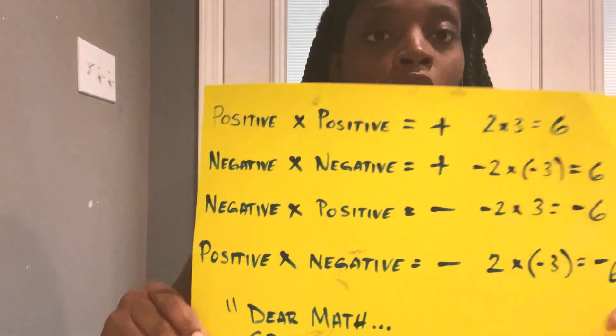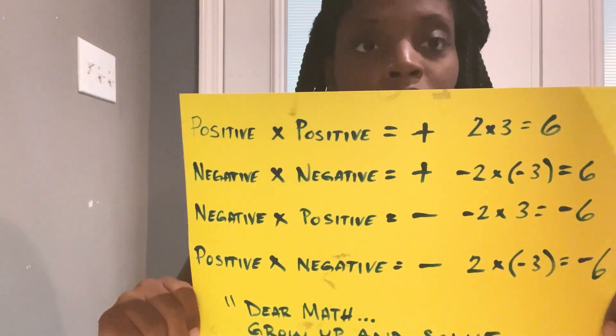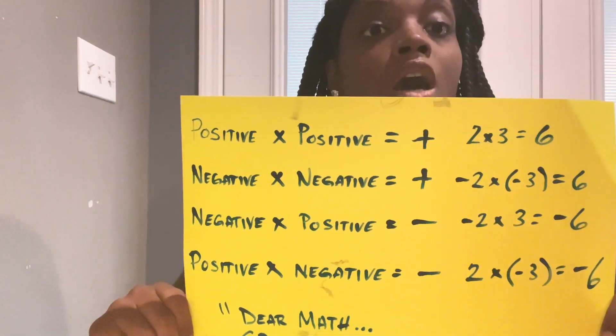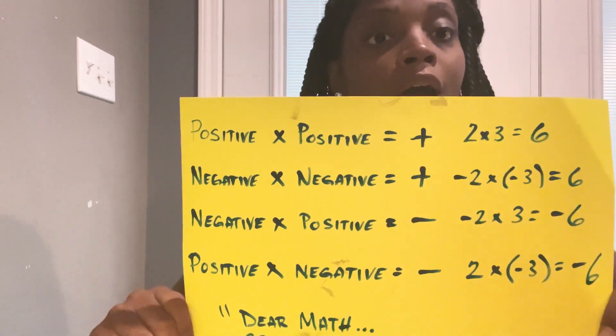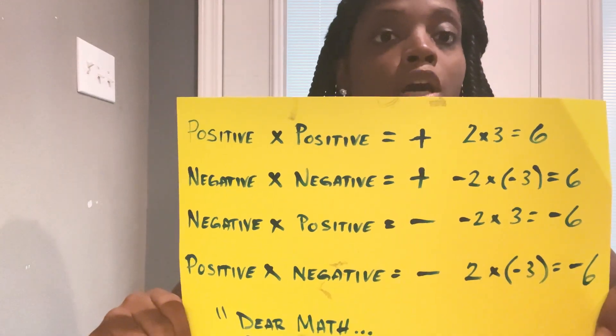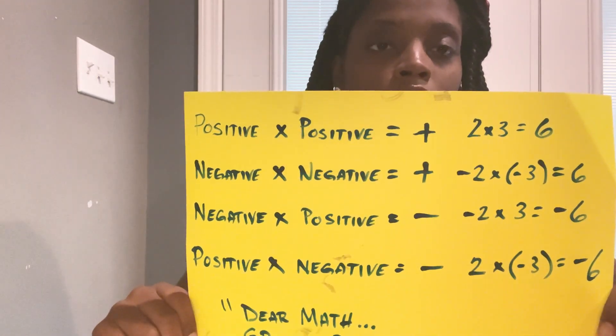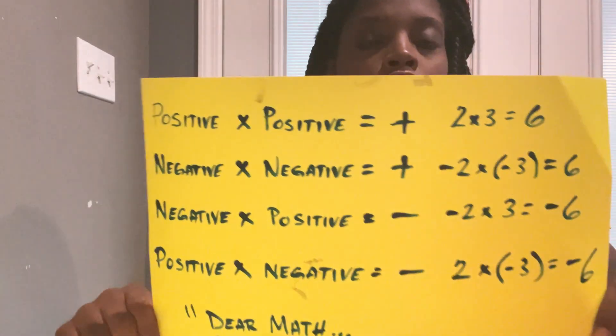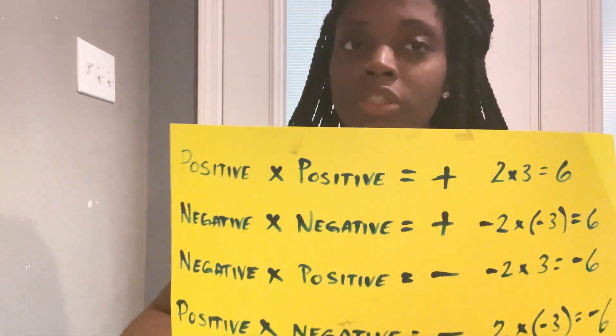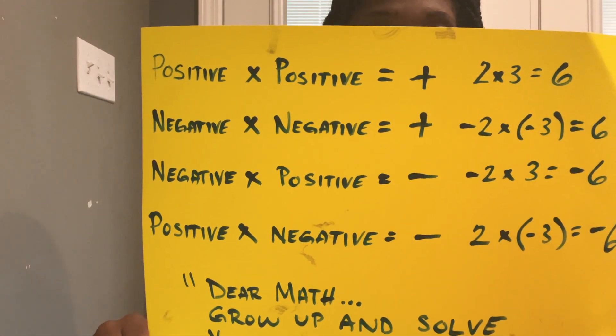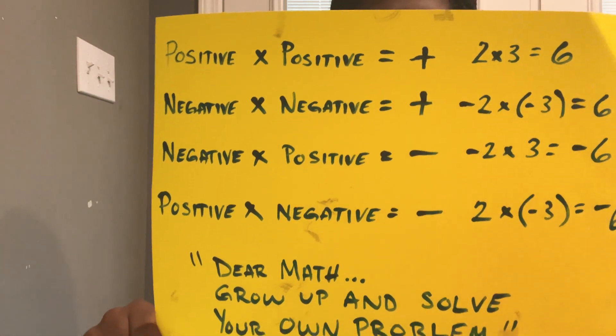In order to solve any math equation, there are certain things you have to know. A positive times a positive equals a positive. A negative times a negative equals a positive. A negative times a positive equals a negative. A positive times a negative equals a negative. This is what you need to know to solve most equations.